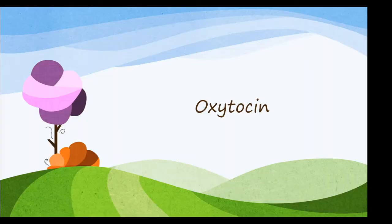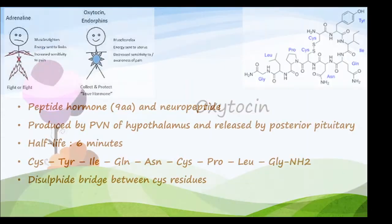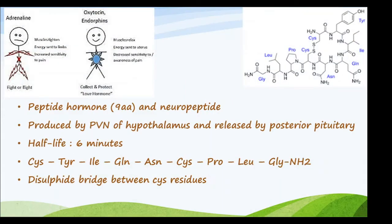Welcome dear students to yet another session on pituitary hormones. Today the topic of interest is oxytocin. Oxytocin is released by the pituitary gland but it is produced by the hypothalamus. It is a peptide hormone consisting of nine amino acids and it is also a neuropeptide, with a half-life of six minutes.